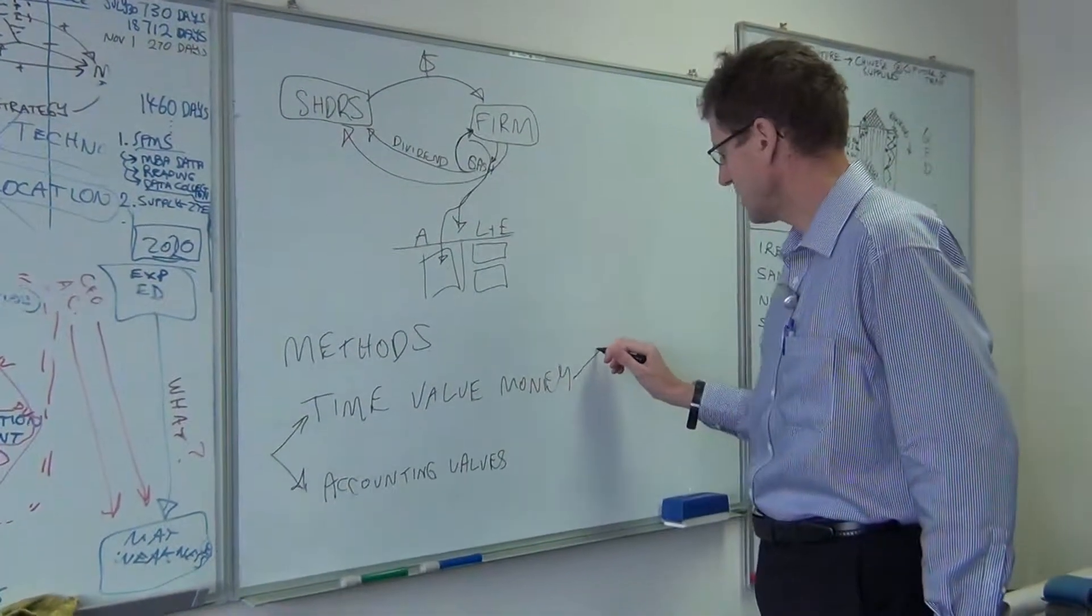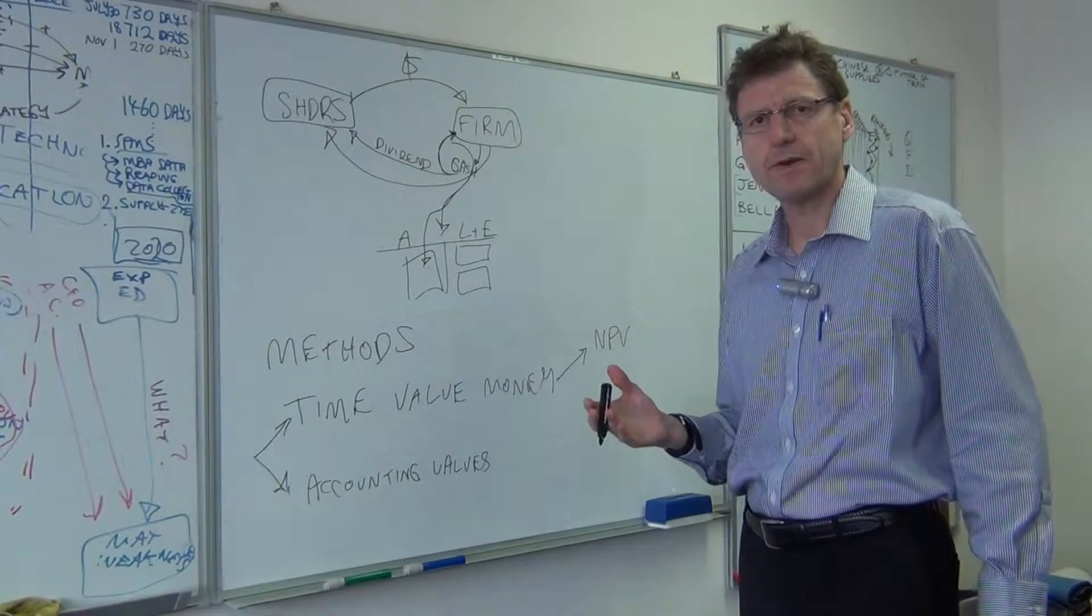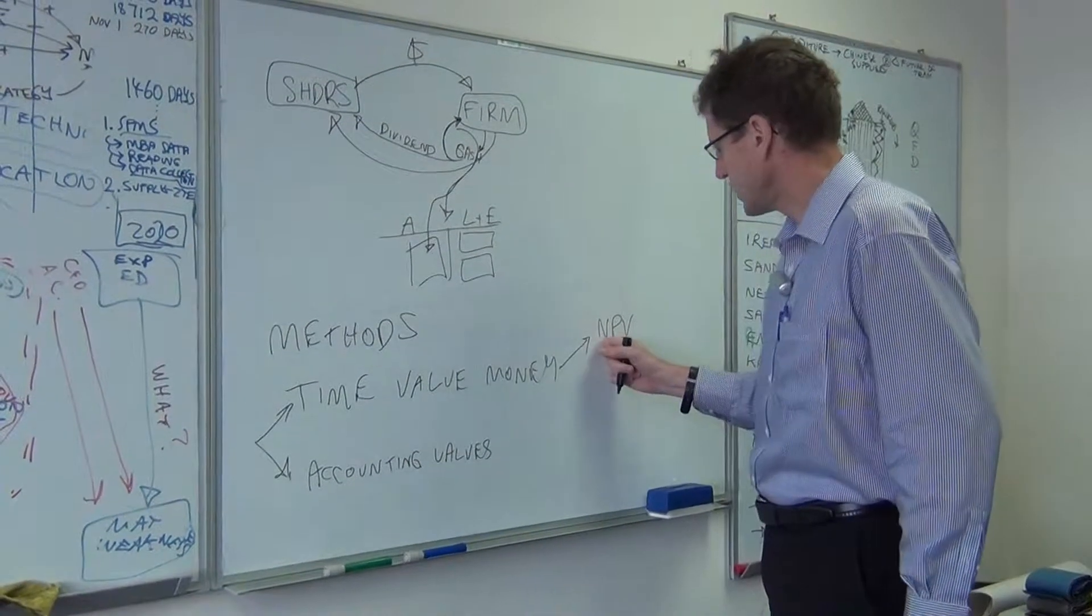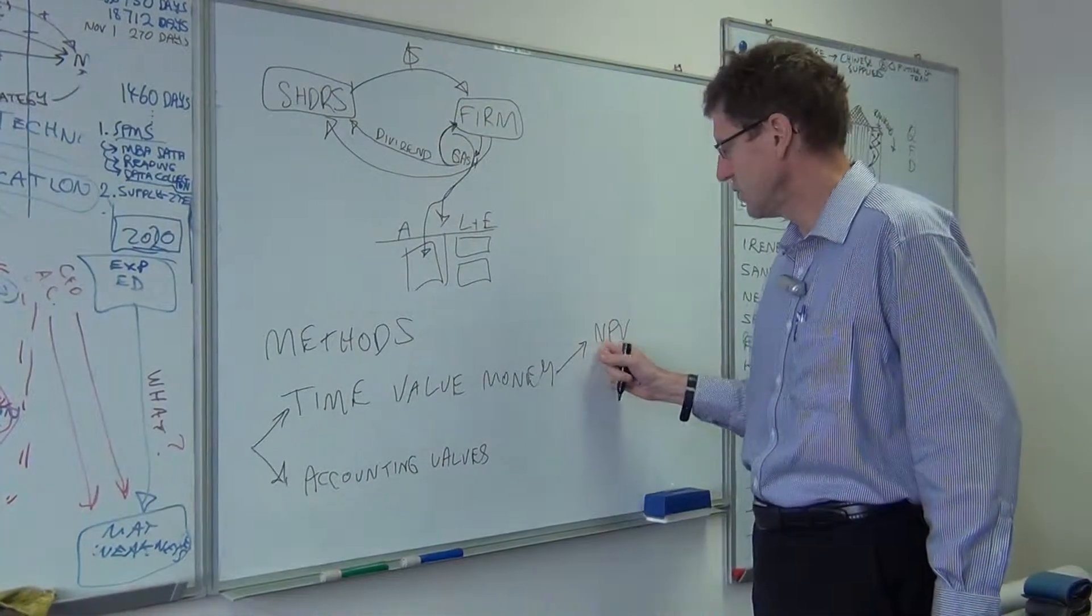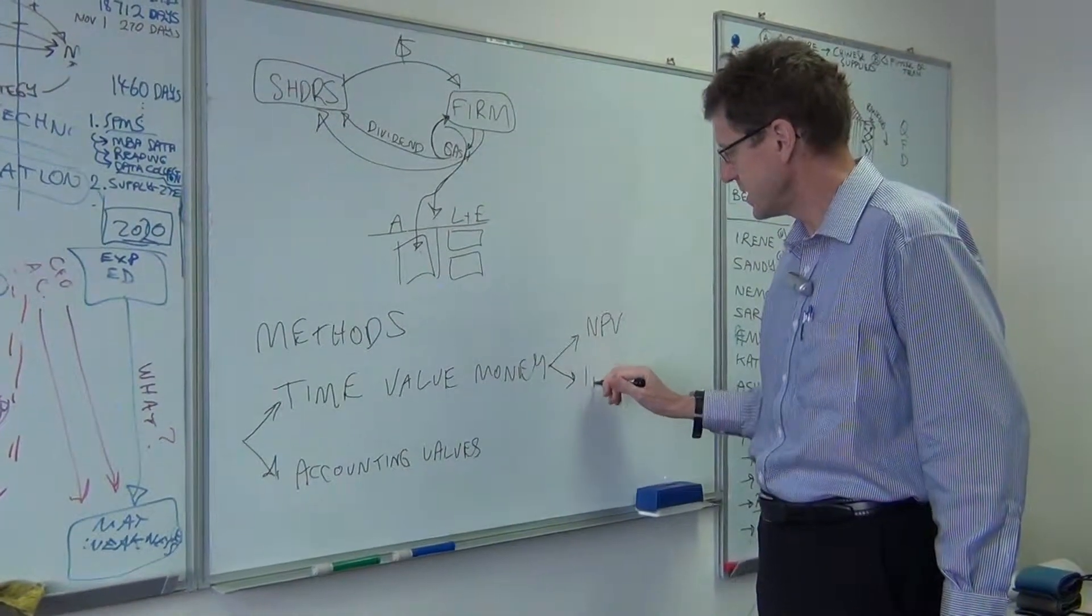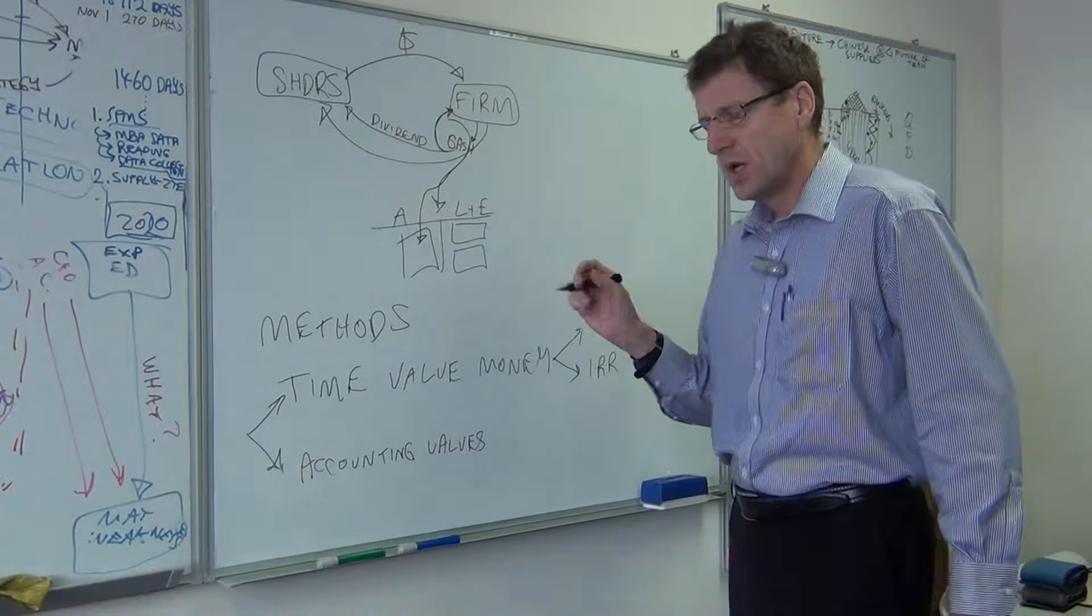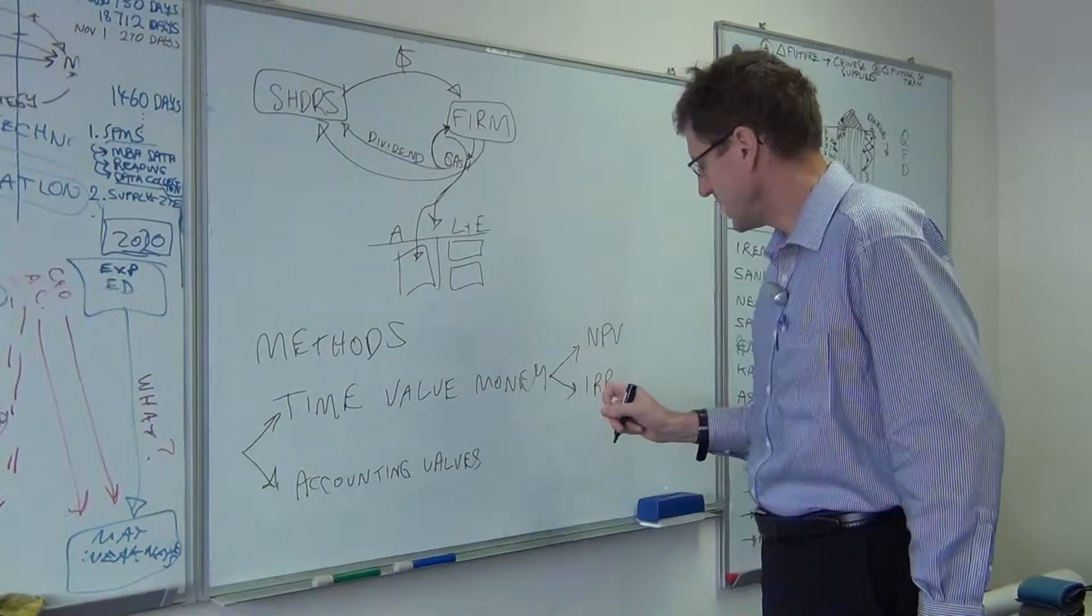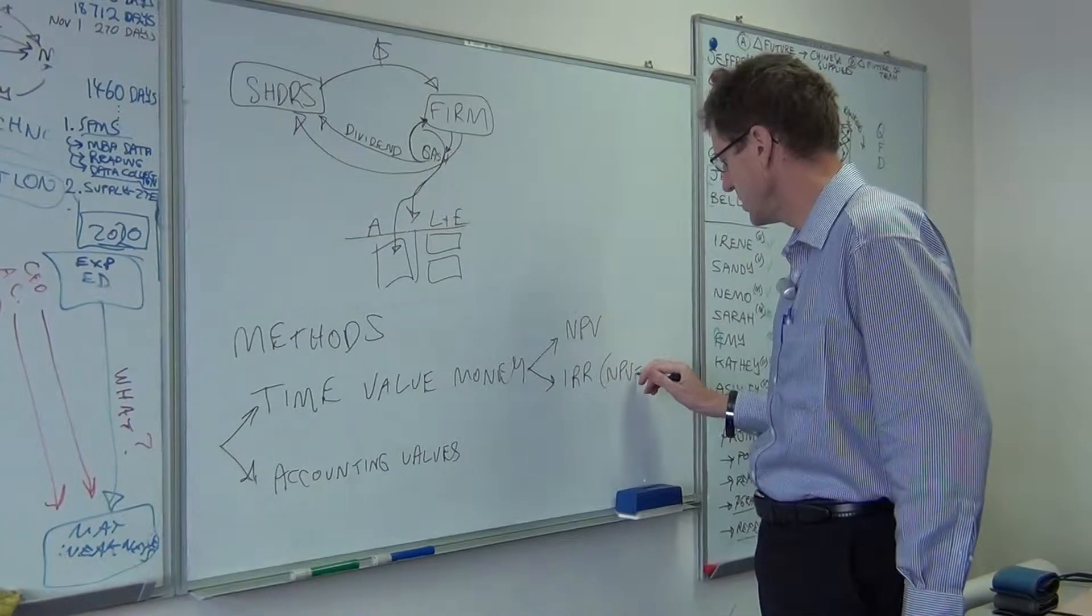Now under the time value of money, we're going to look at net present value method of calculation, where we're actually, given the outflow and given the present value of the future inflows, we want to find out currently, if we adjust the future value of those inflows for time value of money, do we get a net present value of greater than zero or less than zero? A variation of that is the internal rate of return, where we actually find out what discount factor do we have to use on our future inflows, cash inflows, in order to make the net present value equal to zero.